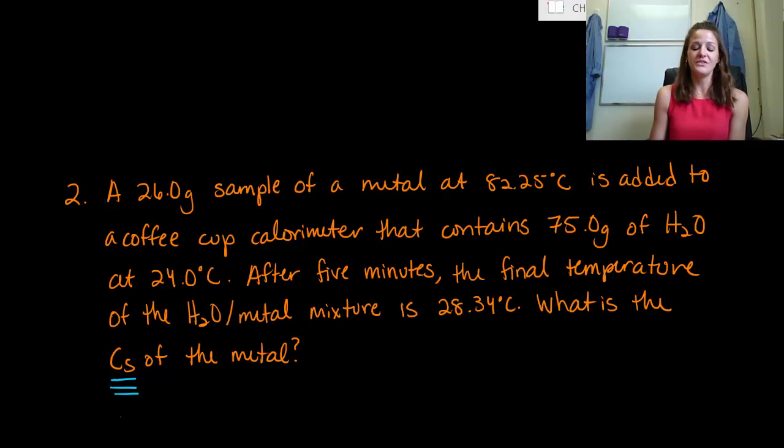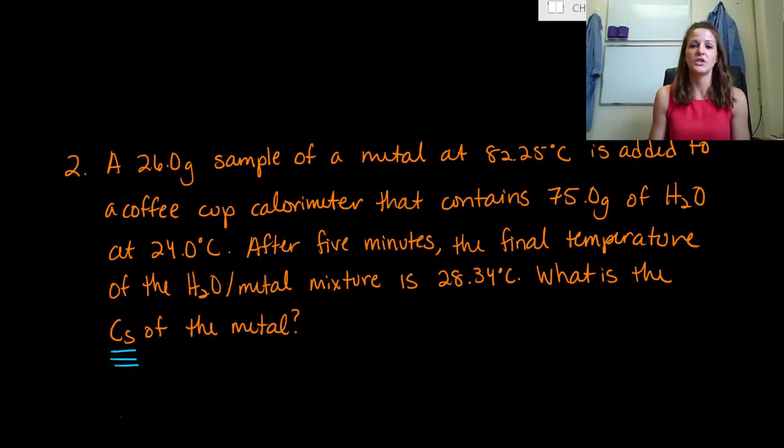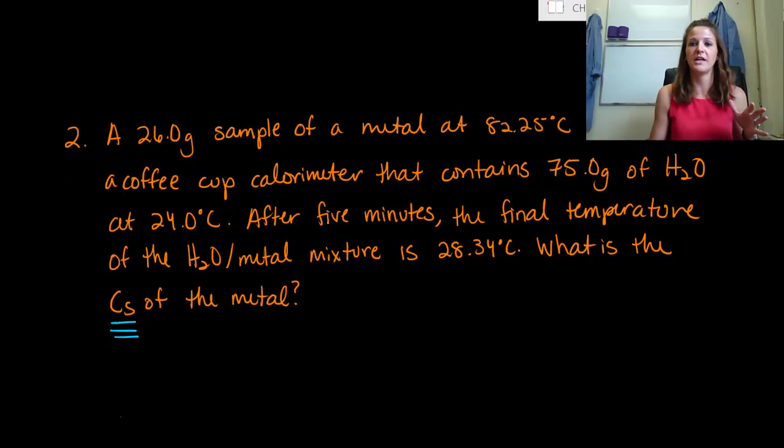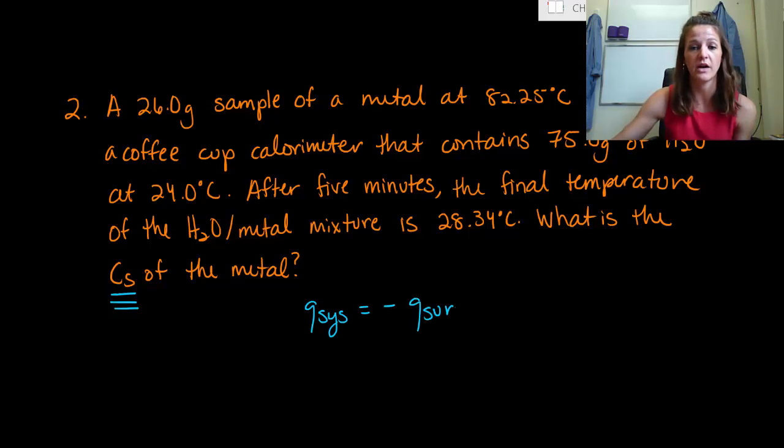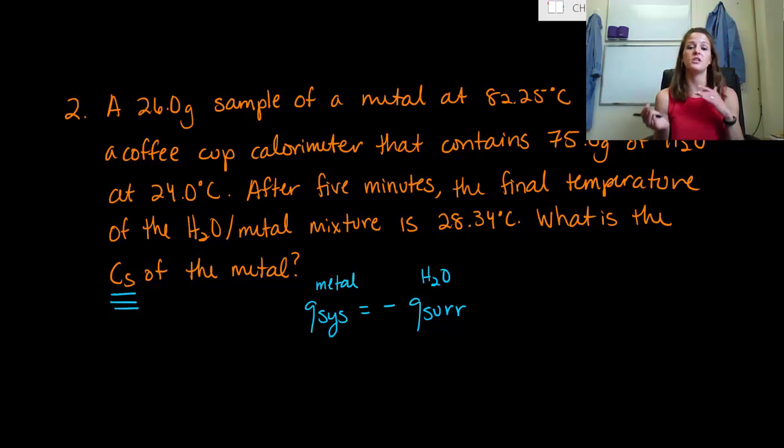Alright, did you get an answer? Hopefully you did. But if you didn't, please do not get frustrated. I'm going to move the question up. I know my face is going to be blocking that, so I apologize, but I do need some space to work this out. So what we have here is that we need to realize that the Q of our system is going to be equal to the negative Q of our surrounding. So now our system, we need to pick which one is our system. I'm just going to say that's my metal, and my surrounding is my water. It literally doesn't matter, you just need to pick one and be consistent. Because if you start mixing the numbers up, then your math is not going to work.